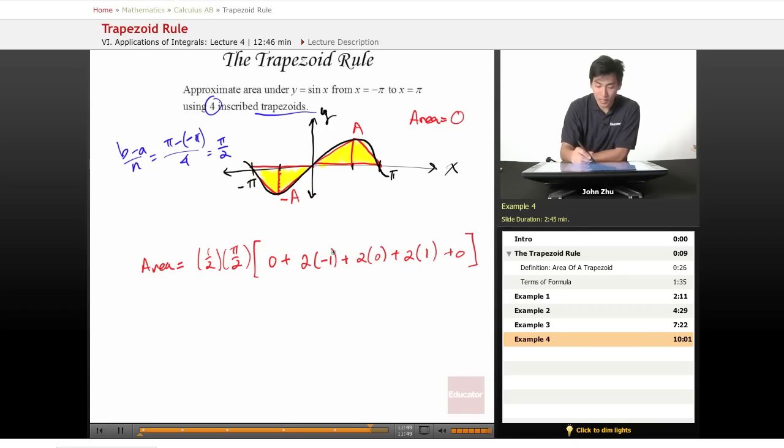And what we did here was just simply plug these terms into the original equation with our corresponding x values. So here we have negative pi over 2, pi over 2.